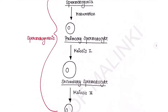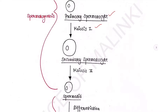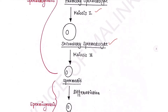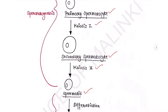Now we will see the diagram to understand it in a better way. Here, this is spermatogonia. It will mature into primary spermatocyte, which will undergo meiosis I and produce secondary spermatocyte. Secondary spermatocyte will undergo meiosis II and produce spermatids.